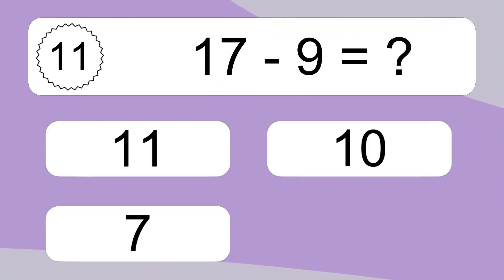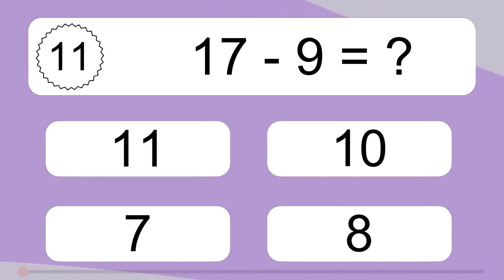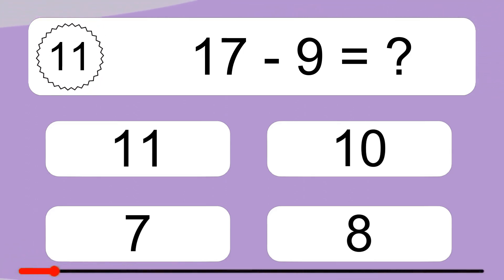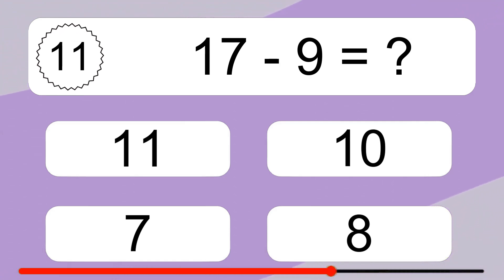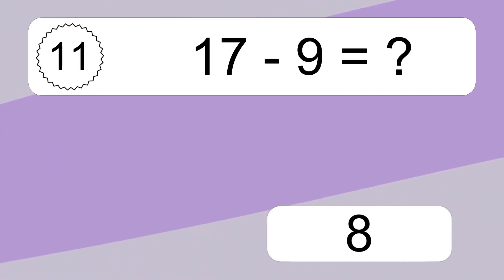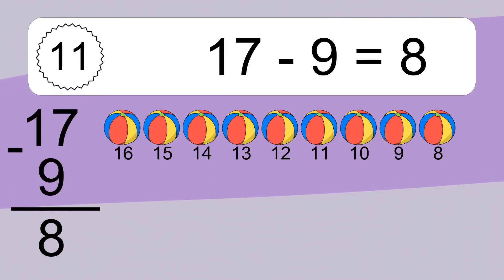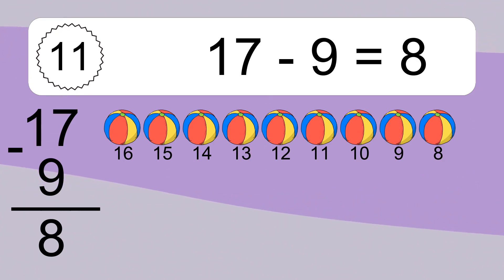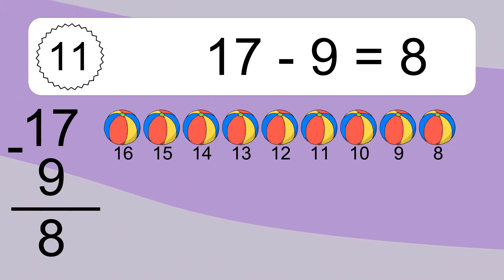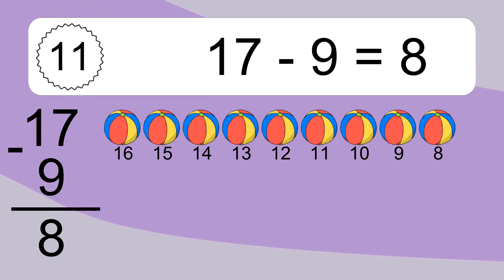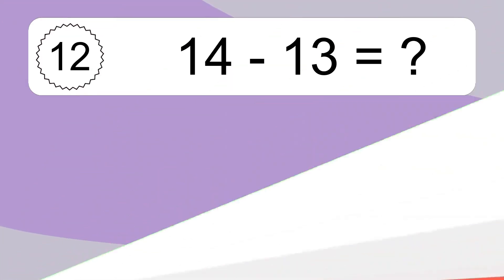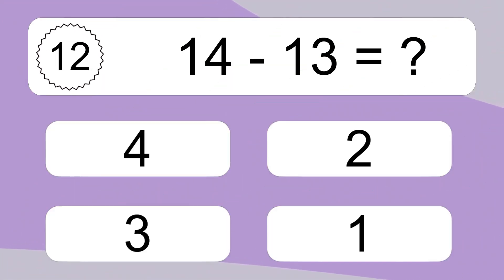17 minus 9 equals what? 17 minus 9 equals 8. Let's count it: 16, 15, 14, 13, 12, 11, 10, 9, 8.